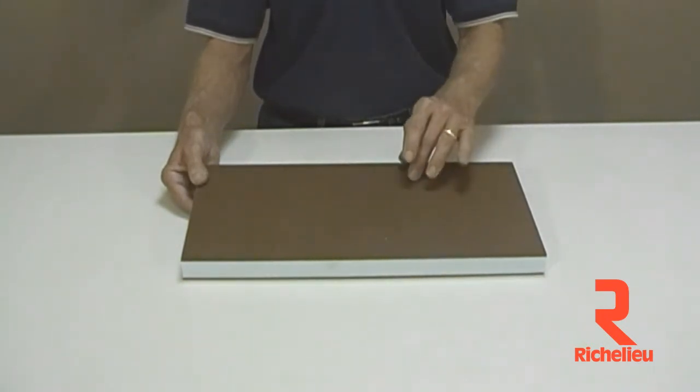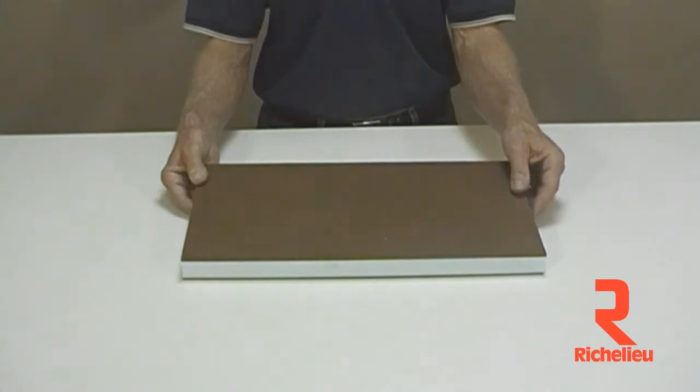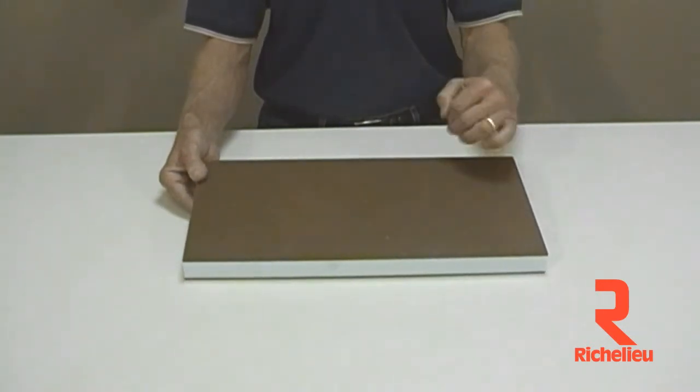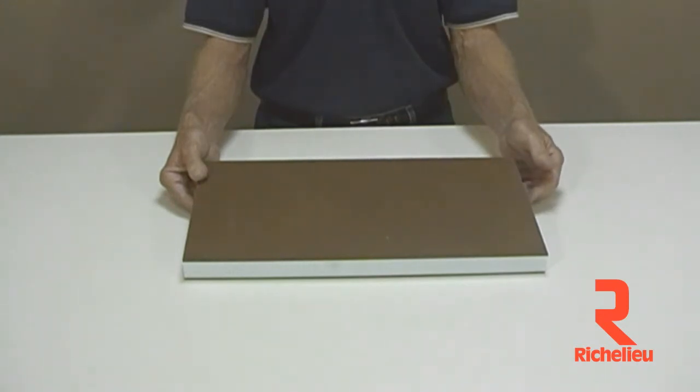There is no added formaldehyde in the eucalyptus fiber face and back. No added formaldehyde in the polystyrene core. Both materials are made from reclaimed and recycled materials, so it will qualify for that.